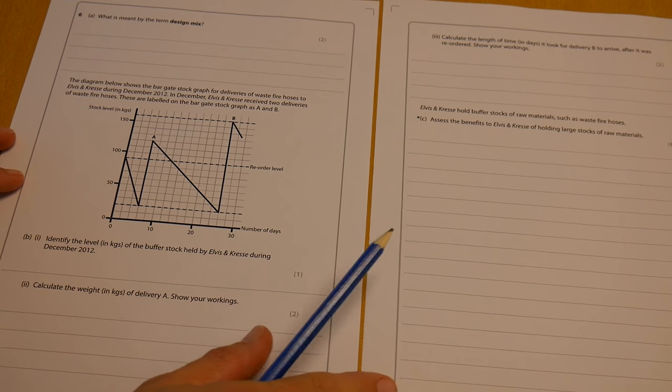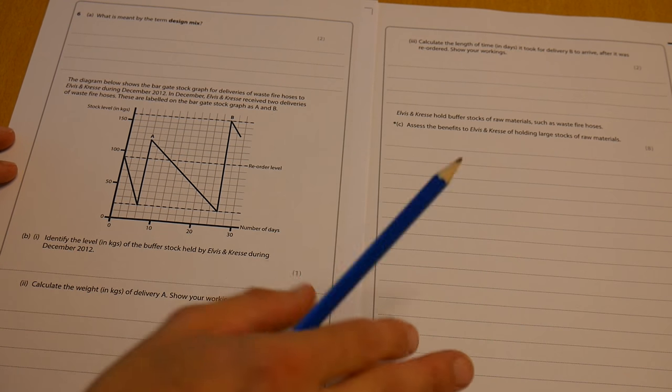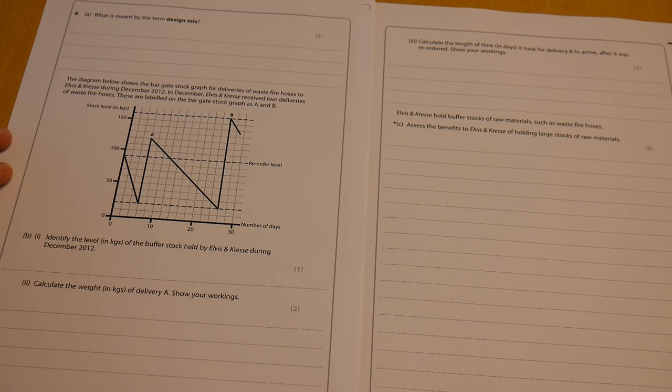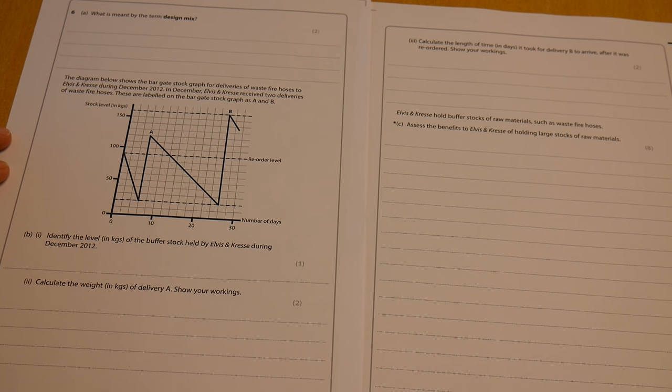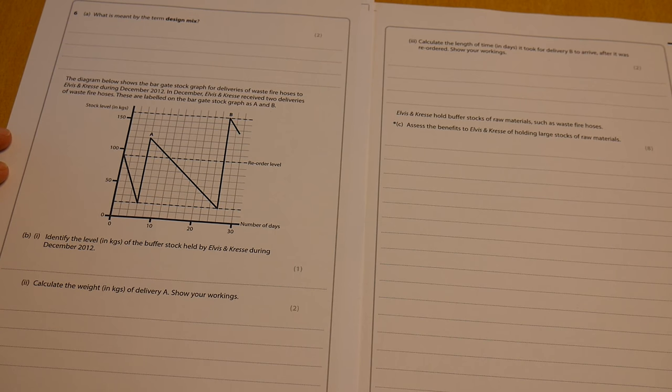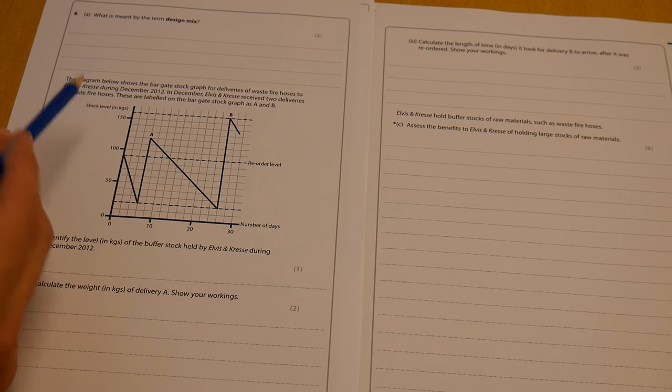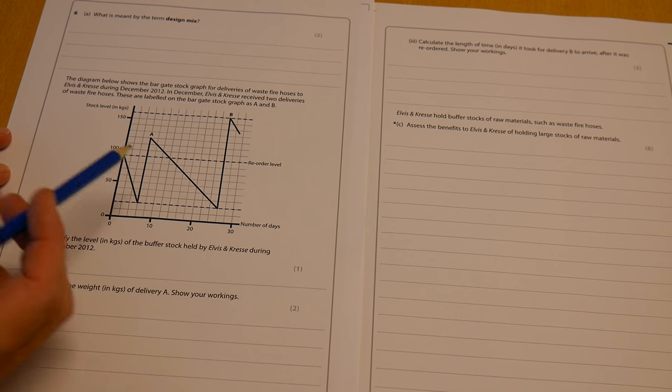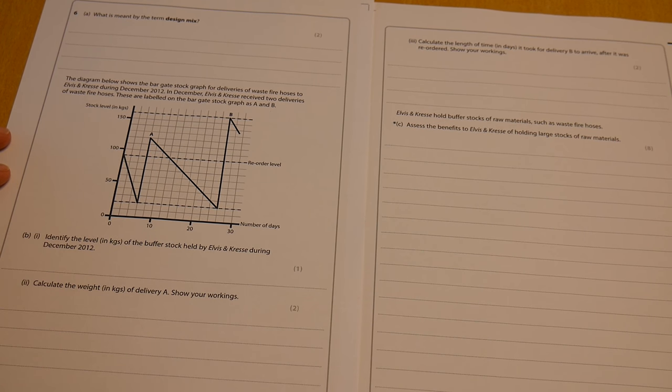This is an older GCSE paper, but still nice and useful for us to get a bit of practice on. If you want to pause the video now, you can have a crack at the questions. So the diagram below shows the bar gate stock graph deliveries of waste fire hoses to Elvis and Kress during December 2012.